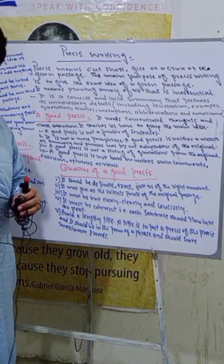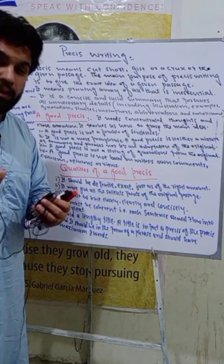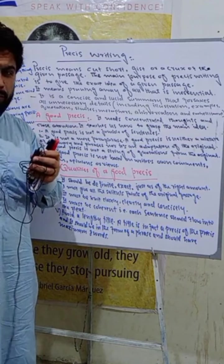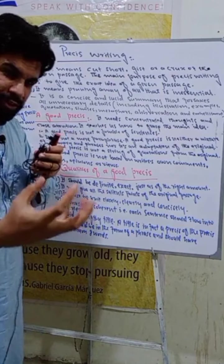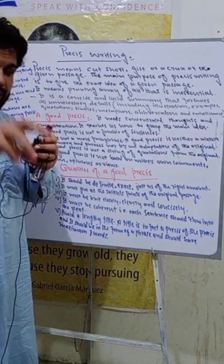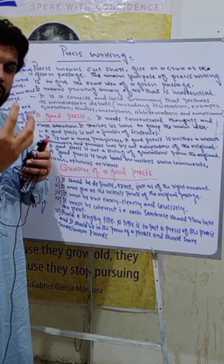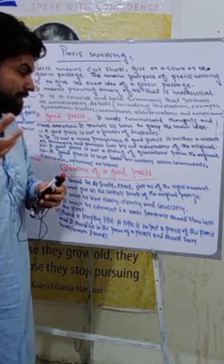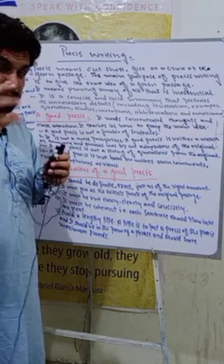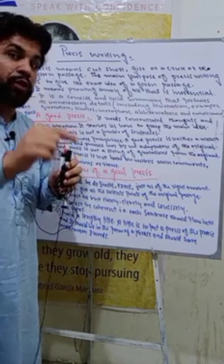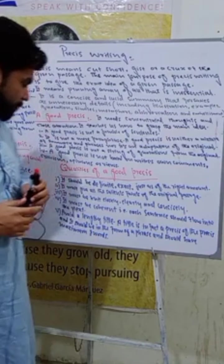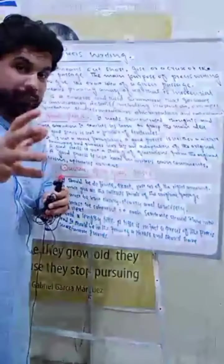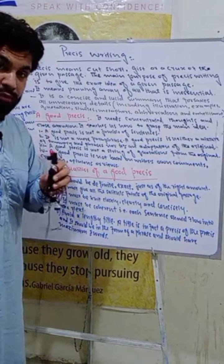What are the essential qualities of a good precis? It should be definite — relevant and very much connected to the original passage. The message should not be irrelevant; whatever theme is given in the original passage, you should maintain that. Your precis should be a faithful representation of the original passage. It should be exact and just the right amount — one-third of the original passage, and you need to do the word counting. It must also give all the salient points of the original passage.